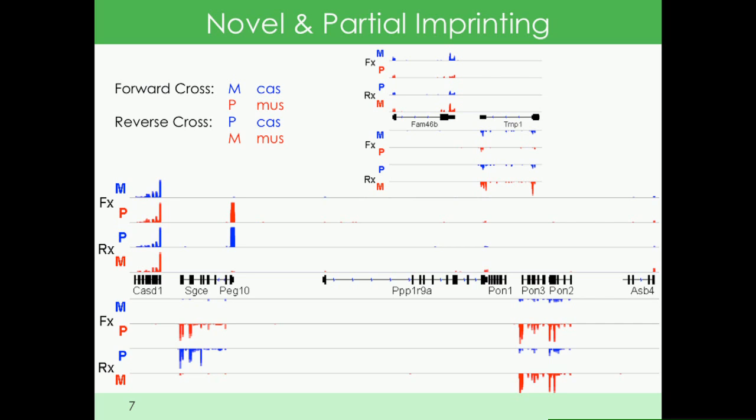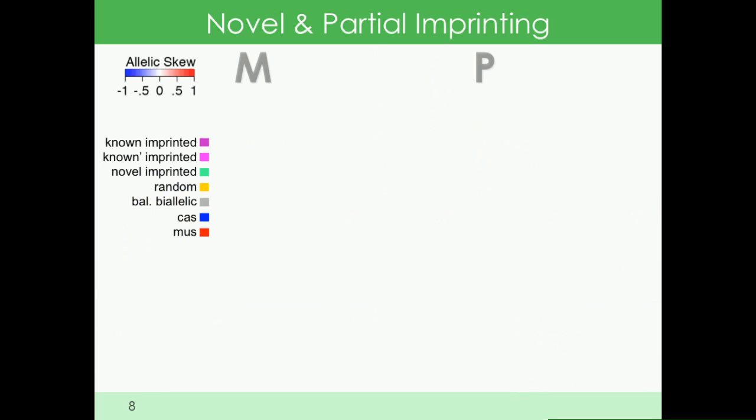But in fact, all the genes in this cluster were reported to be imprinted. PON2 and PON3 are imprinted in the placenta, but in tail-tip fibroblasts they're subject to genotypic variation and expressed much more from the 129 or mus allele. CasD1, on the other hand, was expressed in perfectly balanced biallelic fashion.